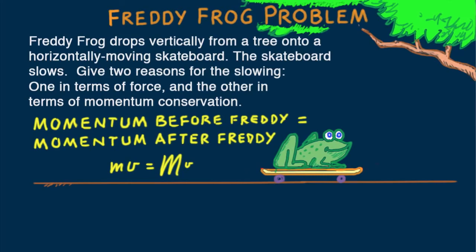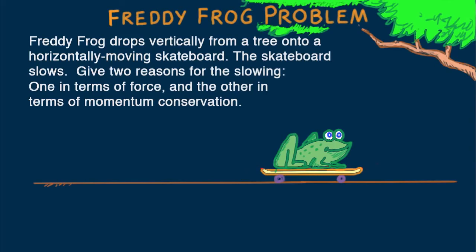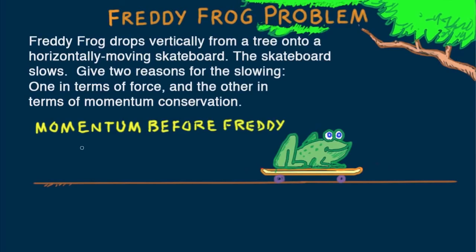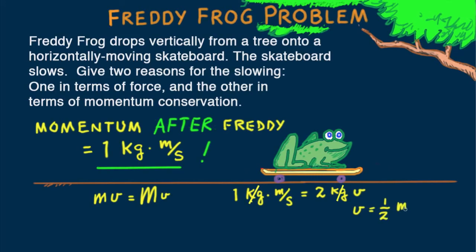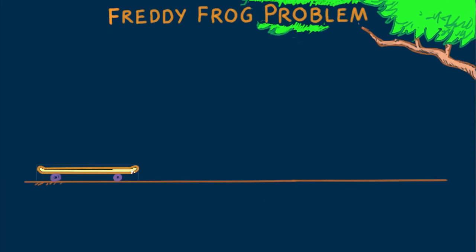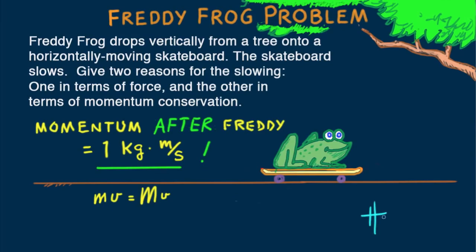Let's put numbers in. Suppose both the skateboard and Freddy have masses of one kilogram and the initial speed of the skateboard is one meter per second. Momentum before Freddy's drop is one kilogram meter per second — and after, it's still one kilogram meter per second. How fast must twice the mass move for the same momentum? The board with Freddy moves at half speed: one-half meter per second. Suppose Freddy's mass is two kilograms — what is the speed of the skateboard when he lands? Until next time, good energy!